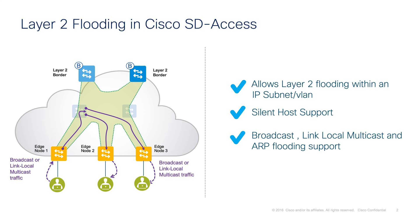Once broadcast is enabled in a subnet, an underlying multicast group is associated with that virtual network and all fabric nodes will join this multicast group. When a broadcast frame is received by the fabric edge node, it is encapsulated in VXLAN and forwarded to all remote edge nodes via the underlay multicast group. The remote edge nodes then de-encapsulate the original broadcast frame and forward it to all local switch ports in the appropriate subnet.